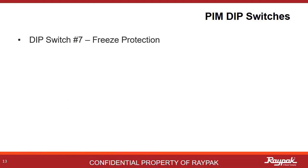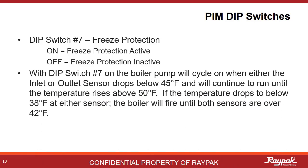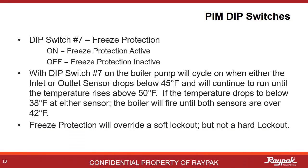Dip switch number seven is another example of some cool Raypack engineering. Turning on number seven enables freeze protection for the boiler. If the temperature drops below 45 degrees at either the inlet or the outlet sensor, then the boiler pump will run for a bit, drawing some heat from other areas in the system until the temperature is higher than 50 degrees at both sensors. If the temperature continues to drop and gets below 38 degrees at either sensor, then the boiler will fire for a few minutes until both sensors are over 42 degrees Fahrenheit. This process will override a soft lockout, but not a hard lockout as that would be dangerous.